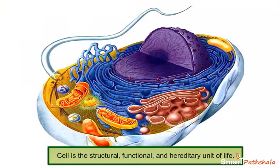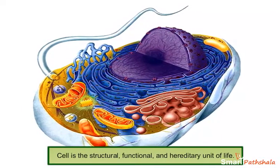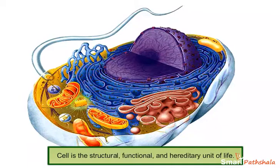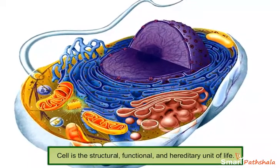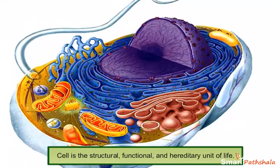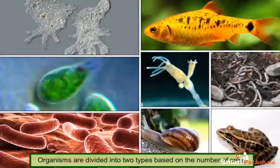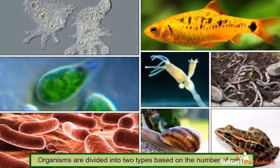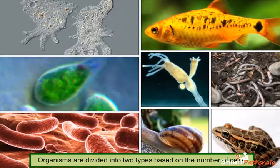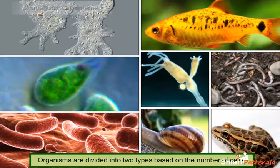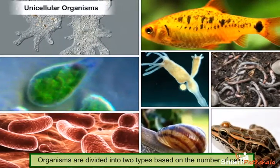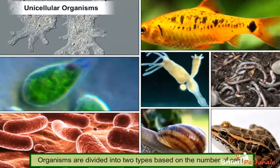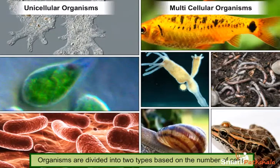Cell is the structural, functional, and hereditary unit of life. Based on the number of cells present in the organism, organisms are classified into two types: unicellular organisms and multicellular organisms.